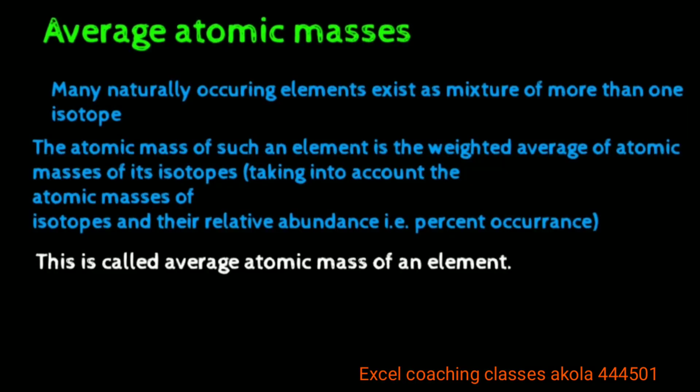Our next topic is average atomic mass. Many naturally occurring elements exist as a mixture of more than one isotope. Isotopes have the same atomic number but different atomic mass numbers. So elements in nature are a mixture of isotopes.